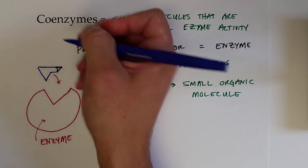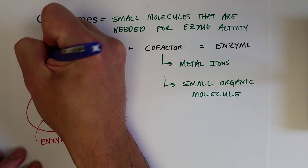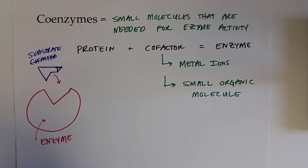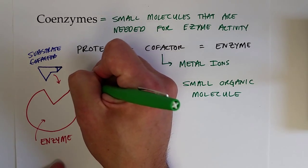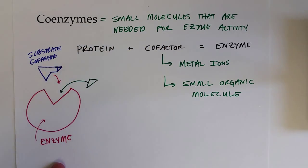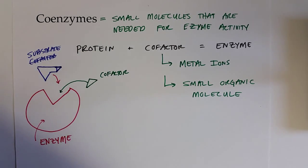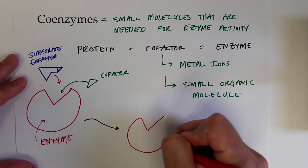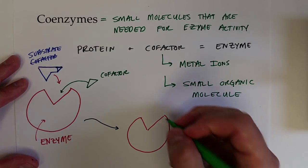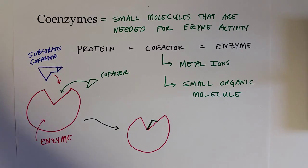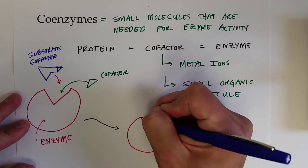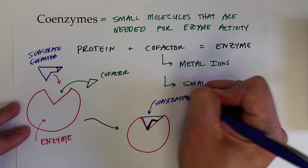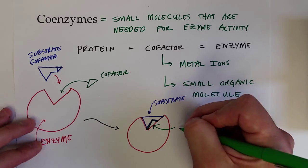What happens is that you need the presence of a cofactor to bind at the active site as well. When you have the cofactor or coenzyme present at the active site, suddenly there's the right fit. So there's my cofactor, and now my substrate can fit perfectly in that active site now that the coenzyme is present.